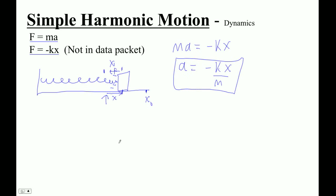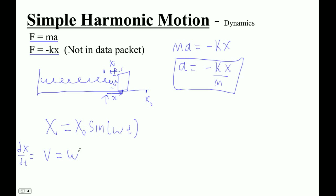And if we set ma equal to minus kx, we can solve for acceleration: acceleration is minus kx over m. Now let's do a little calculus. There's x equals x-naught sine omega t. If I take the derivative of this, dx/dt is actually equal to velocity. The derivative of sine is cosine — a slope of a sine graph is cosine — and the omega comes out in front via the chain rule, so you end up with omega x-naught cosine omega t.